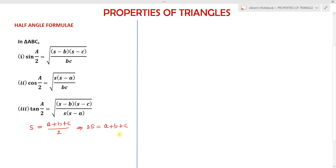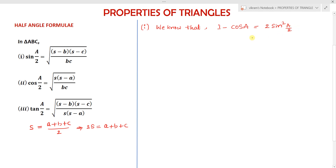To prove the first formula, consider sin(A/2). We know that we can express sin(A/2) in terms of cosine using the identity: 1 − cos A = 2 sin²(A/2). These are the half-angle formulas in trigonometry, so 1 − cos A = 2 sin²(A/2).